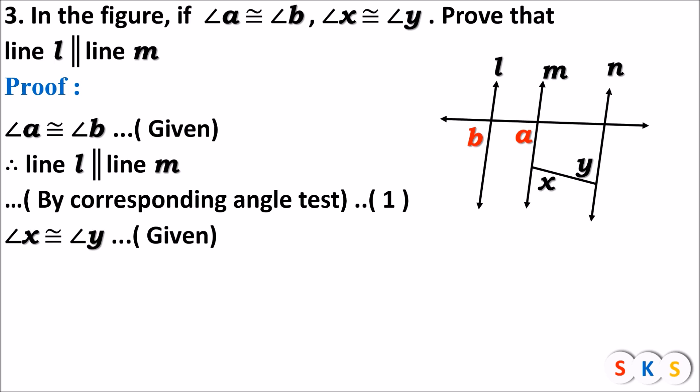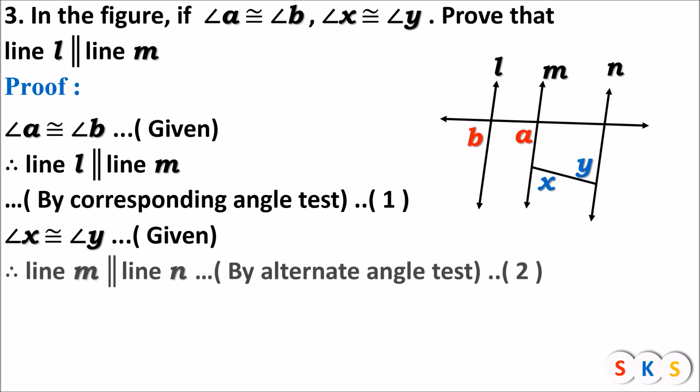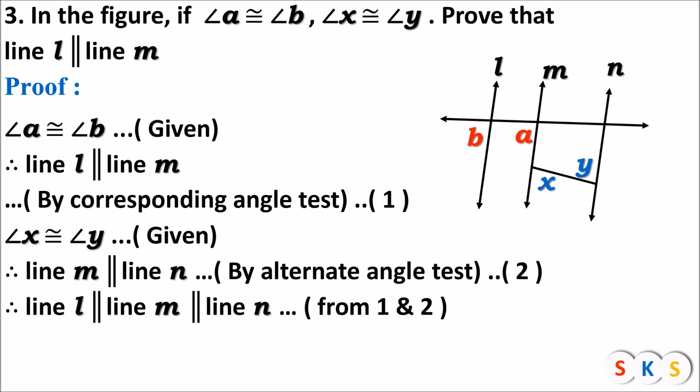Angle x is congruent to angle y — also given. Angle x and angle y are alternate angles, and we know if alternate angles are congruent then the lines are parallel. So line m and line n are parallel because alternate angles formed by them are congruent. Therefore, line m is parallel to line n by the alternate angle test — equation number two. From equations one and two, line l ∥ line m and line m ∥ line n, so all three lines are parallel: line l ∥ line m ∥ line n.